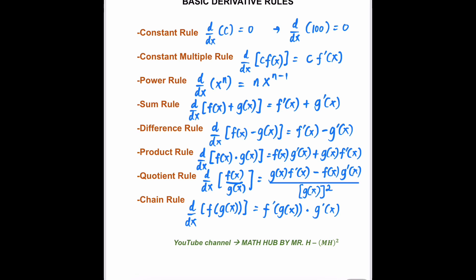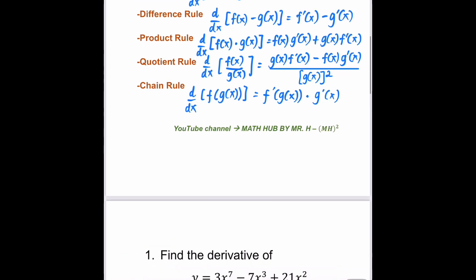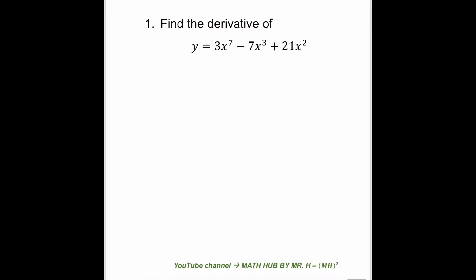Let's take a look at example number one. We have to find the derivative of y equals 3x to the power of 7 minus 7x cubed plus 21x squared. For this given function, you can see that it's going to be a mixture of different rules. One thing that you will be doing here is you will be differentiating each term.